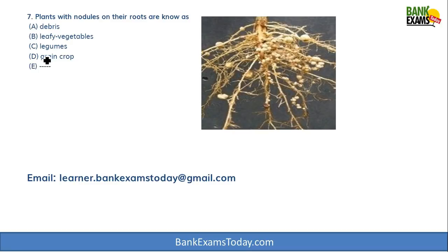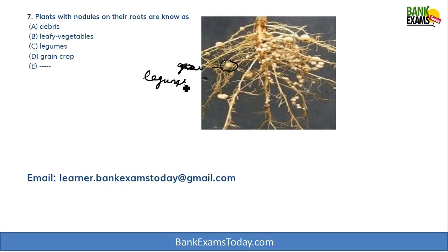The last question asks: plants with no nodules on their roots are known as — options are debris, leafy vegetables, legumes, grain crop, and none of the above. Nodules are small swollen parts of the roots. Legumes like beans grow from root nodules, grain crops are obtained from the upper portion of the crops, and debris means waste material. So the answer is C — grain crops.